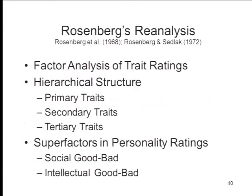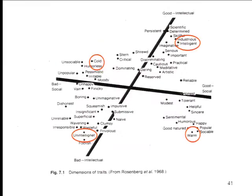Seymour Rosenberg at Rutgers did a reanalysis of Wishner's data using factor analysis — a technique that takes a pattern of correlations among elements and extracts fundamental dimensions running throughout the entire correlation matrix, like length, width, and height in the physical case. What Rosenberg discovered was that there are two big super-factors — two fundamental dimensions — running through personality rating experiments. These are: social good-bad, meaning is the person nice or not nice; and intellectual good-bad, meaning is the person smart or not smart. The very traits Asch identified as central lie very close to these factors — intelligent and unintelligent lie near the intellectual dimension, and warm and cold lie near the social dimension.